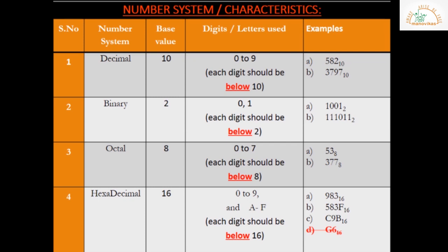There is a subscript of 10 because 10 is the base value. When you write an example for any number system, please don't forget to mention the base value as a subscript. The second example is 3797 — each digit satisfies the condition of being below 10, and the base value is 10, so this example also belongs to the decimal number system.